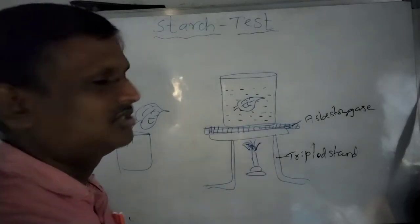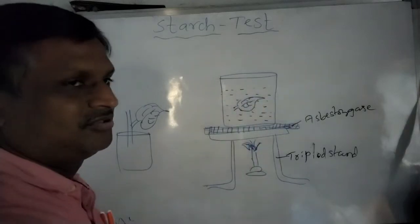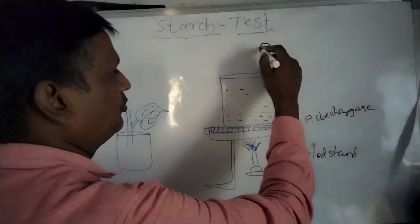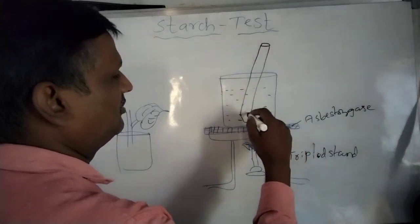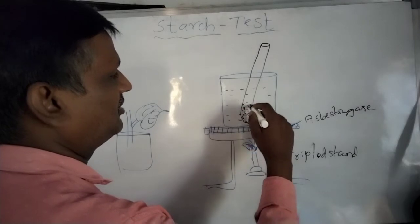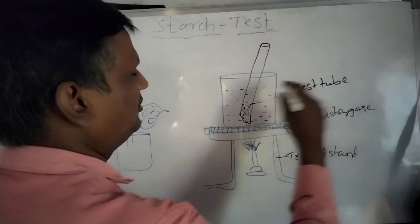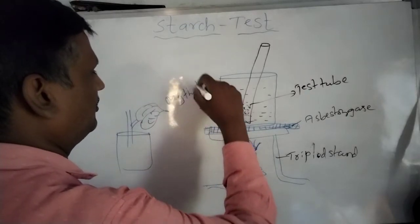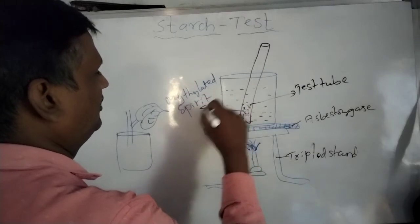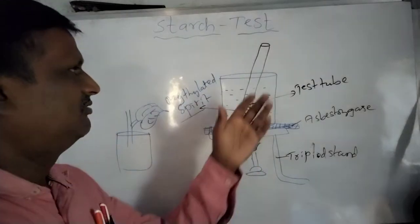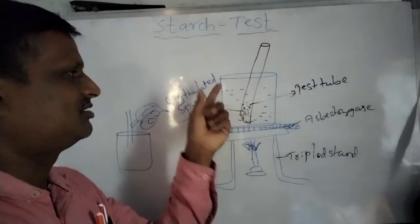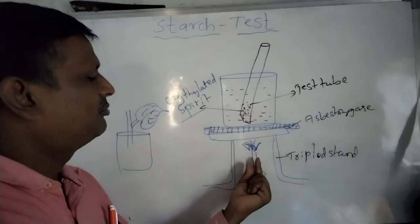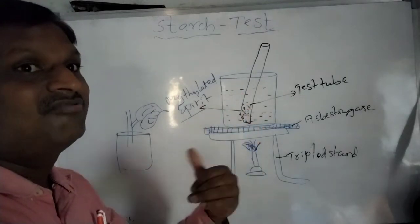After some time, this leaf should be transferred into a test tube or boiling tube which contains methylated spirit or alcohol. The test tube is kept inside the beaker of water rather than directly on the Bunsen burner because methylated spirit is highly inflammable.